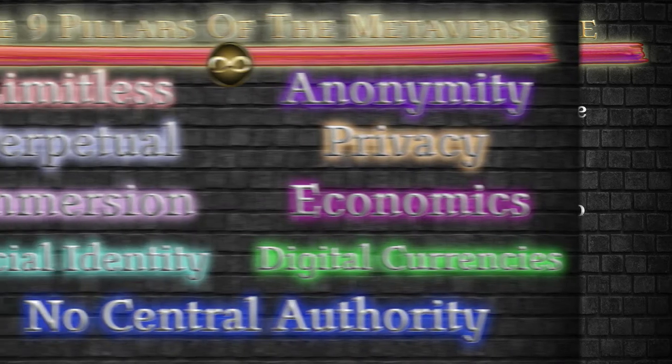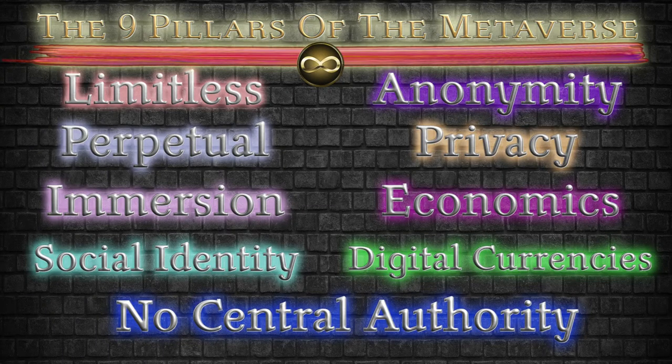These nine pillars are: Limitless, Perpetual, Immersion, Social Identity, Anonymity, Privacy, Economics, Digital Currencies, and No Central Authority.